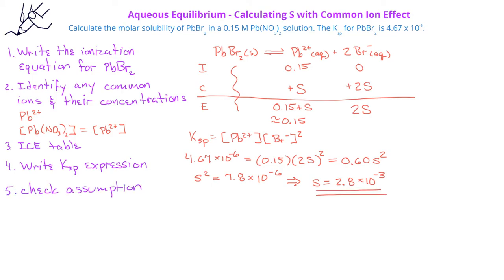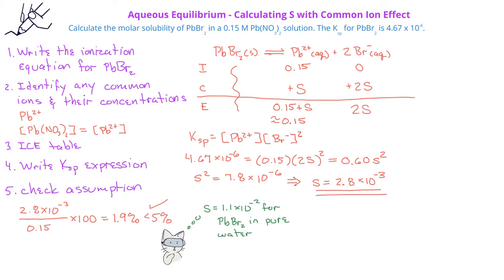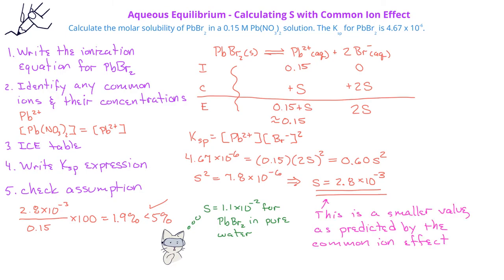We check our assumption: S divided by 0.15 times 100 gives 1.9%, which is less than 5%, so the assumption is valid. Comparing the molar solubility of lead-2 bromide in this solution to pure water — in the previous video, the molar solubility in pure water was 1.1 × 10⁻². The solubility in the lead nitrate solution is much lower, which is exactly what we expect from the common ion effect.